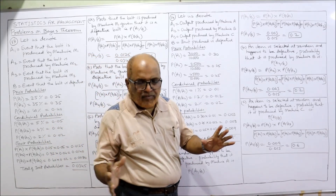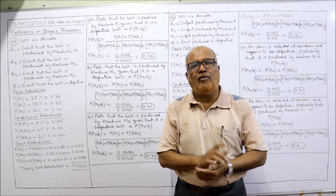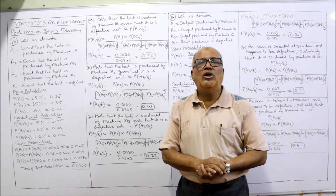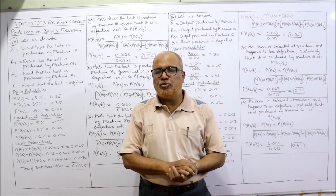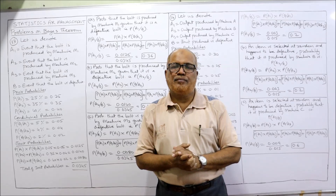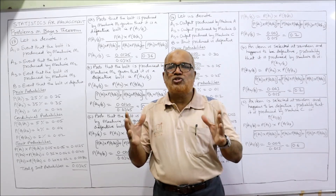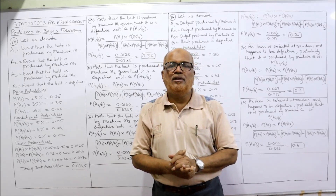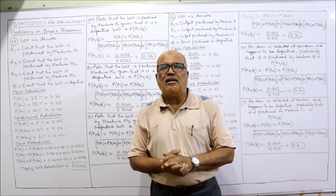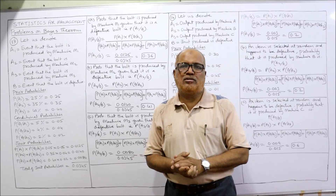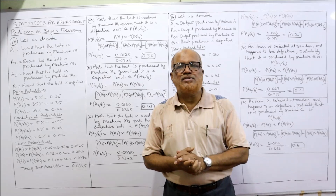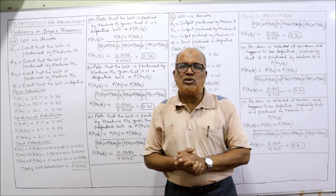In total I have explained 14 problems on the topic of probability. In the next video I will start unit 2 — theoretical distributions — covering probability distribution using the binomial theorem, Poisson theorem, and normal distribution. If you're satisfied, please like the video, share my channel, leave comments, subscribe if you haven't yet, and support via Super Thanks below.